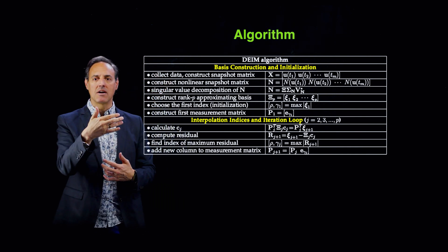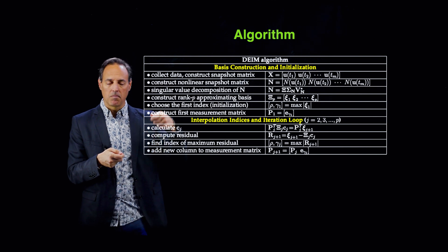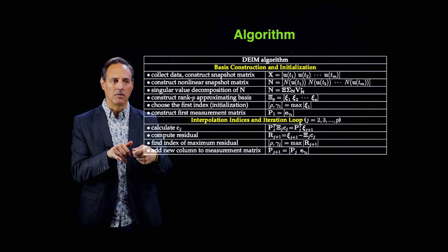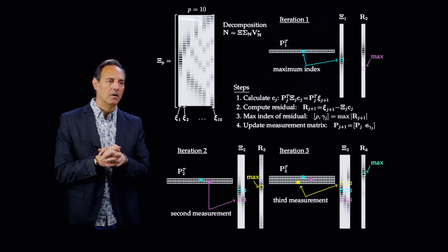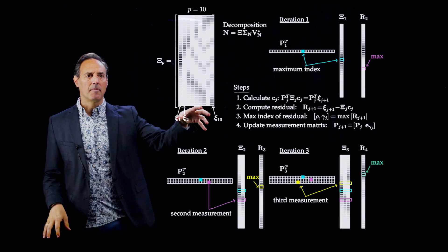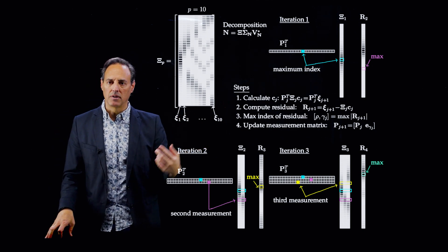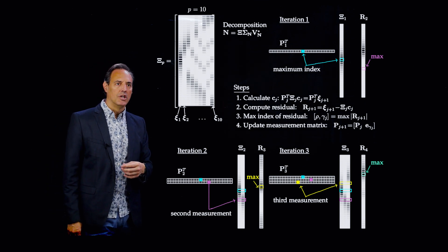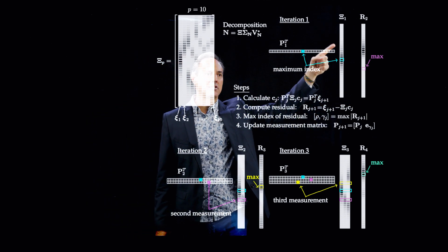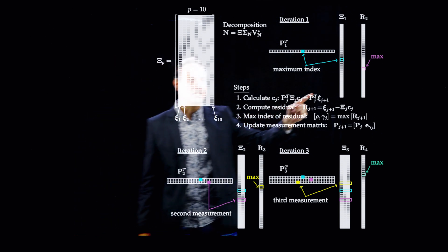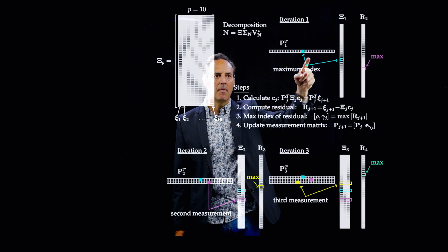That's what the algorithm does — pick where the residual is largest, place an interpolation point there, then repeat. For a graphical illustration: here are the modes, say a subspace C_P with 10 modes for a rank-10 approximation. In iteration one, look at the first column C1, find its maximum, and make that the first measurement location. Then compute the residual — in this measurement subspace, how much of C2 is projected? Where that is maximal, place the next sensor.